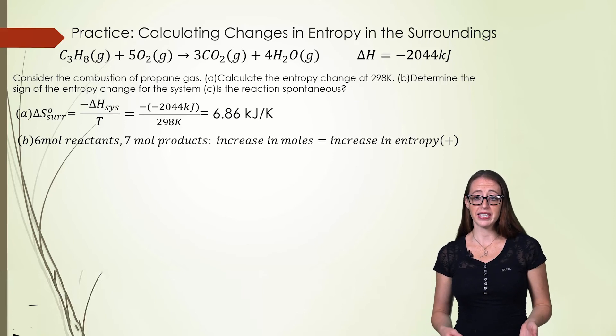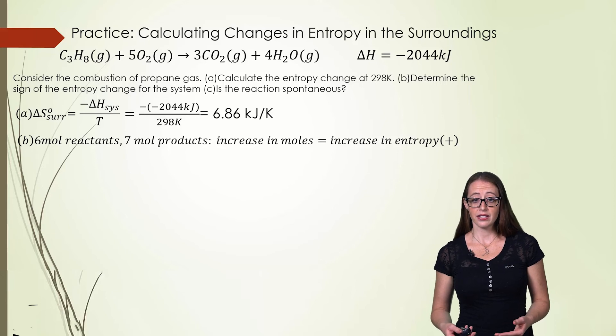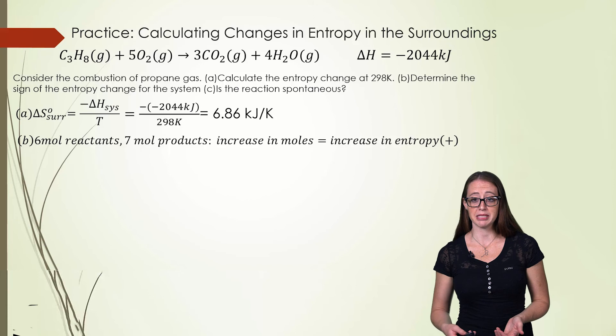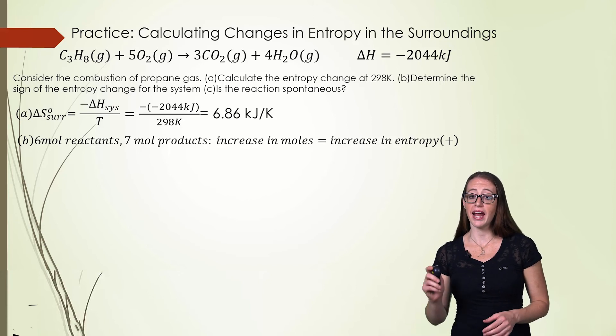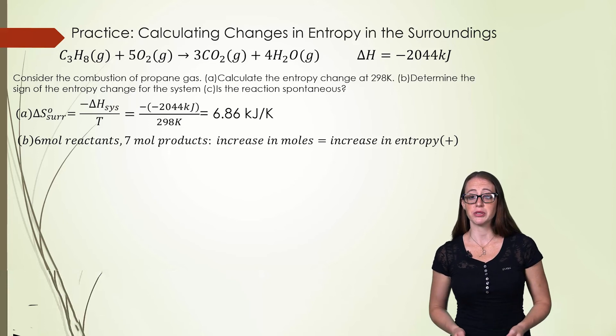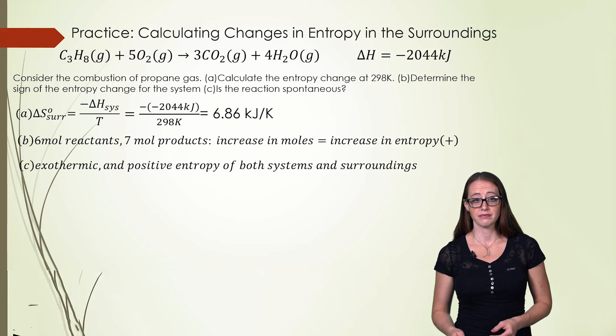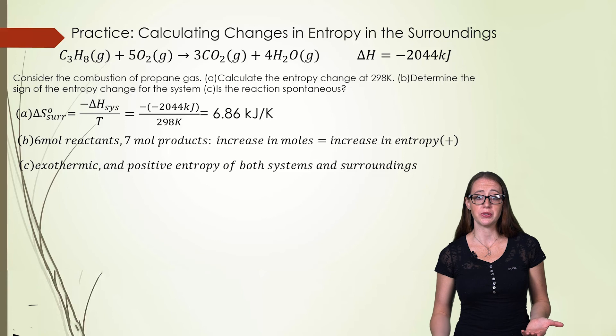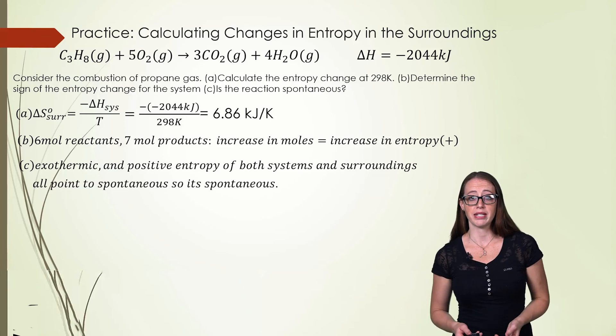Finally we are asked to see if we can decide the spontaneity. We have an exothermic reaction which is more likely to be spontaneous and the entropy of both the system and the surroundings increase. Therefore everything is pointing toward it being spontaneous and it must be spontaneous. There are situations where we wouldn't be able to do that and we'll talk about those in a minute.